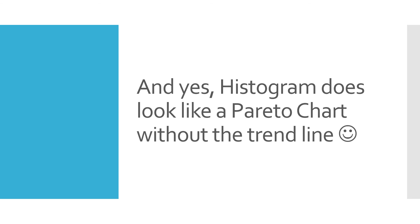A histogram does look similar to a Pareto chart, which we have covered in a separate video in the seven QC tools playlist. The key difference is that a Pareto chart has a trend line, whereas a histogram does not have a trend line.